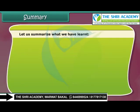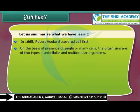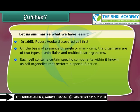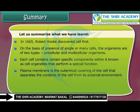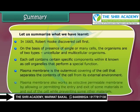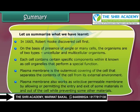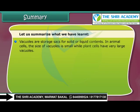Let us summarize what we have learnt. In 1665, Robert Hooke discovered the cell first. On the basis of the presence of single or many cells, organisms are of two types: unicellular and multicellular. Each cell contains certain specific components known as cell organelles that perform special functions. The plasma membrane is the outermost covering of the cell that separates the cell's contents from its external environment. It also works as a selectively permeable membrane, allowing entry and exit of some materials while preventing others.